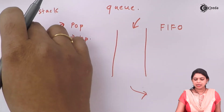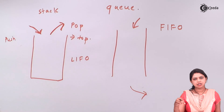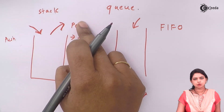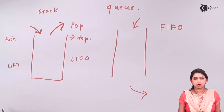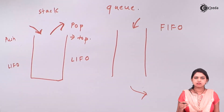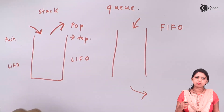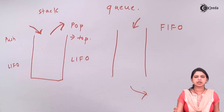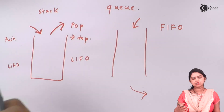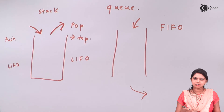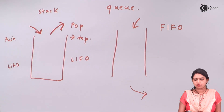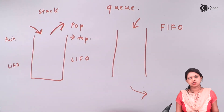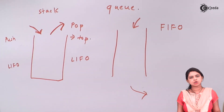The element which is inserted last will be removed first. This is called Last In First Out, or LIFO. This is because the stack is closed at the other end, so the element inserted last will come out first.